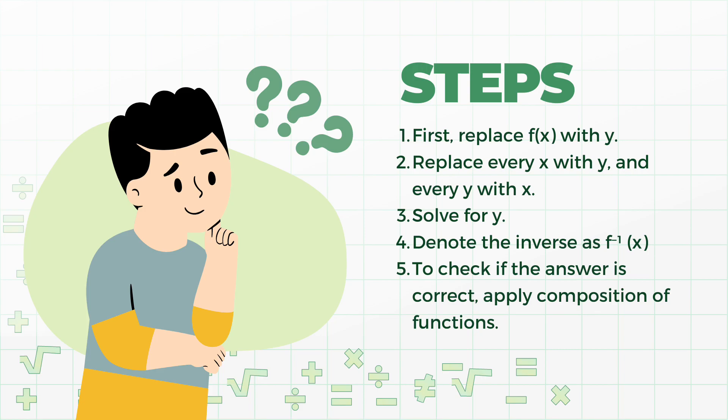So how do we get the inverse function? To get the inverse of a function, let these five steps be your guide. First, replace f(x) with y. Replace every x with y and every y with x. Solve for y. Denote the inverse as f inverse of x. To check if the answer is correct, apply composition of functions.